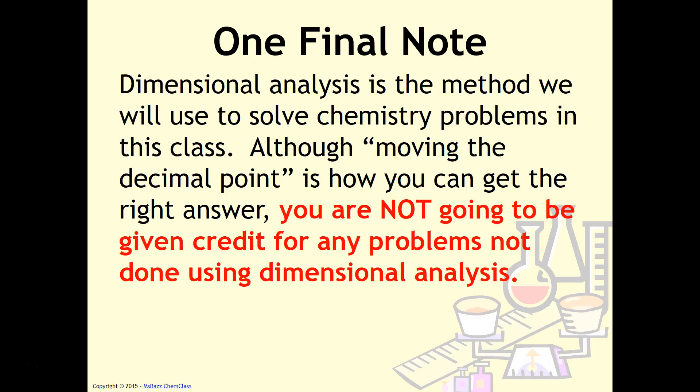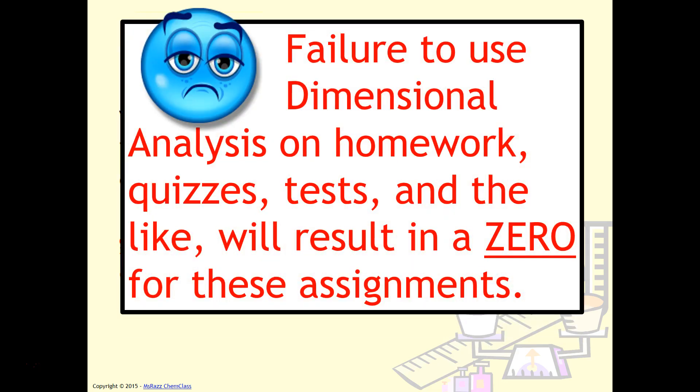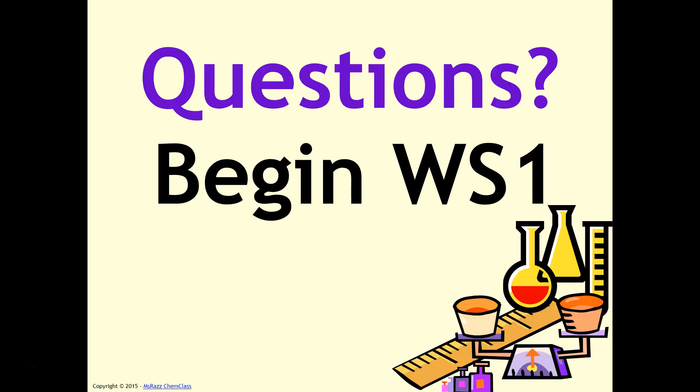One final note, dimensional analysis is the approved method we will use to solve chemistry problems in our class. Although moving the decimal point is how you can get the correct answer, you are not going to be given credit for any problems not done using dimensional analysis. Failure to use dimensional analysis on homework, quizzes, and tests will most likely result in a zero for these assignments. The importance isn't about getting the right answer. It's about the method that we're using to get it. Please make sure that you adhere to these guidelines and pay attention to the guidelines set forth by your teacher, and good luck. Thank you so much for watching.